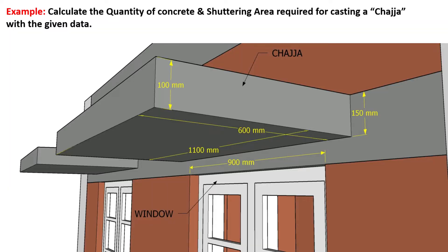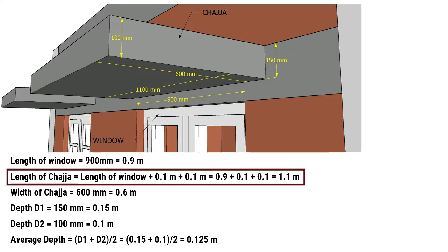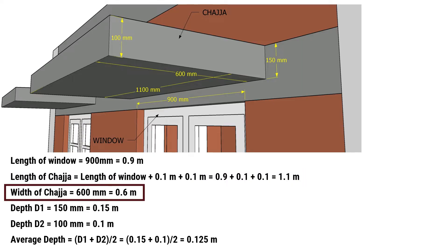In our example, we have a window with a length of 900 mm, which is 0.9 meters. To calculate the length of chhaja, we add 0.1 meters of projection to both ends of the window, making it 1.1 meters in length. The width of chhaja is given as 0.6 meters.